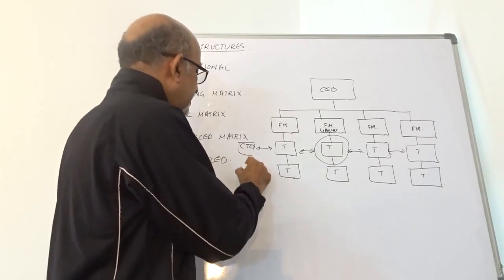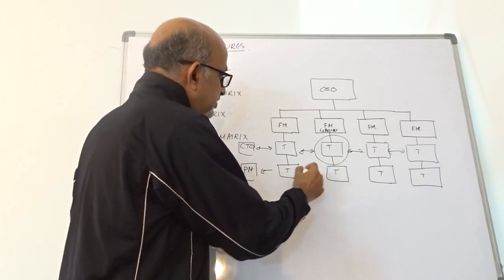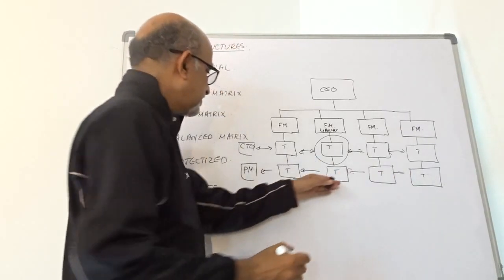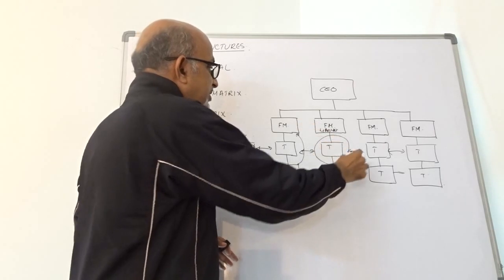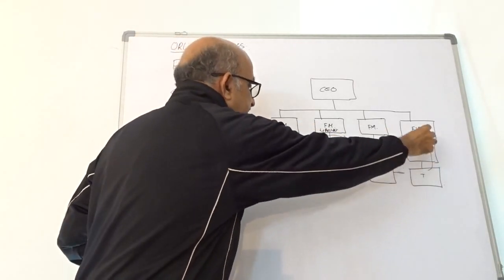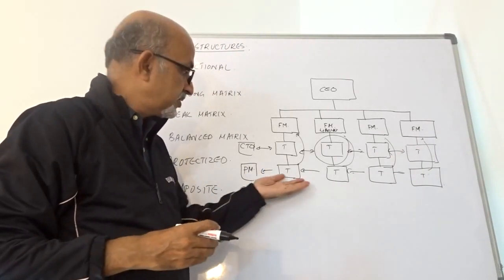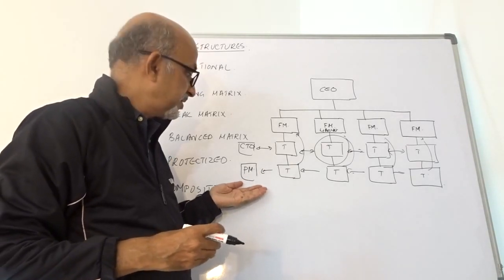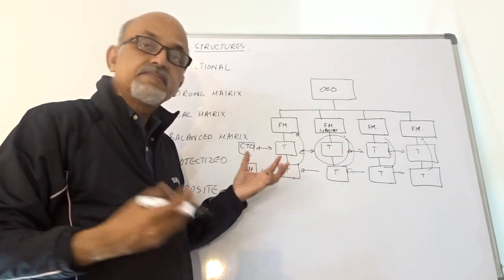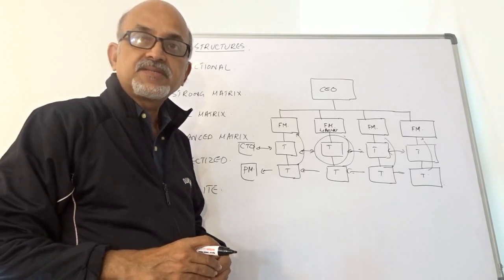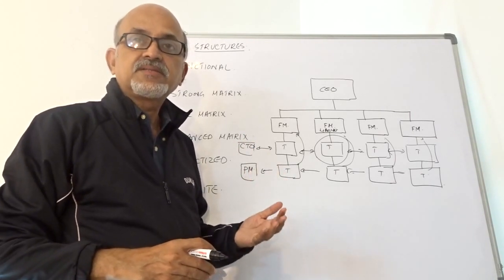Let's say we have an independent project manager. Some of the team members are reporting to the project manager for project-related activities, and for department activities, they will report to their functional managers. It is a dotted line reporting — every team member has more than one boss. The matrix can take three forms: strong matrix, weak matrix, and balanced matrix.